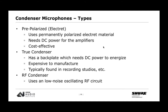The third type is the RF condenser, which uses a low-noise oscillating RF circuit. RF or radiofrequency condensers are found most commonly in shotgun-type microphones. Because of the lower capsule tension and the way they work, they perform well in dusty and humid environments. They're also known for being very flat and true to the original sound source.